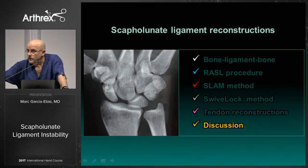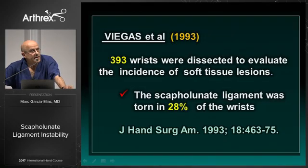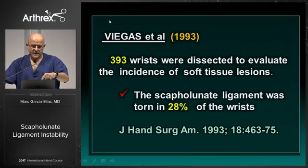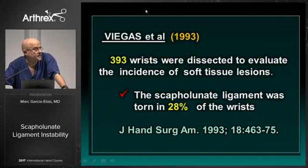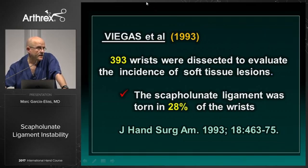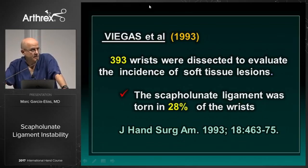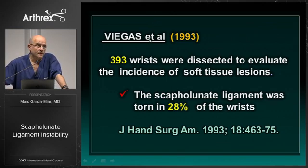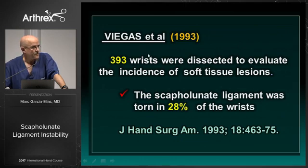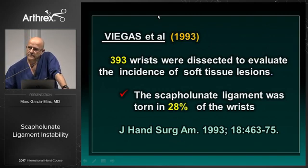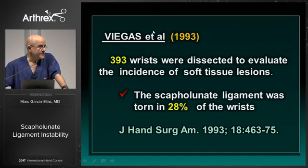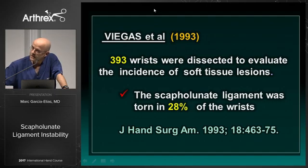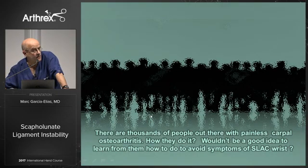I will close this discussion by saying this. In 1983, Vigas disclosed his series of 393 dissections of wrists and found that 28% of those wrists had complete scapholunate dissociation. My question is: if in the aging population more than one-fourth of people have complete tears of the scapholunate and they don't have pain and they don't have any instability — what are we doing here? Maybe we should learn how nature does it and find a way of treating more patients more effectively, because there are thousands of people out there with painless carpal osteoarthritis. Thank you.